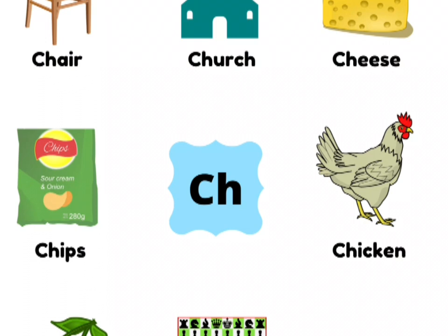Cheese, chips, chicken. Here CH says CH. Even in this sound, we throw air out of our mouth. So it's CH, CH, CH. And this action shows the train going.